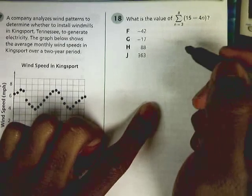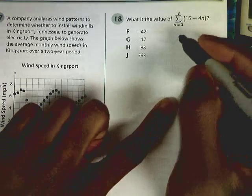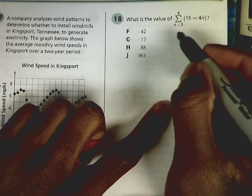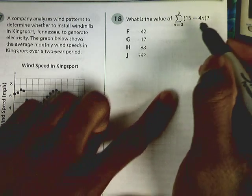All right, this is the Algebra 2 Practice EOC question number 18, and it asks us what is the value of the summation of 15 minus 4n?